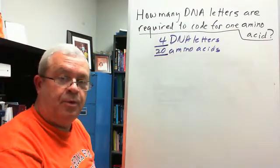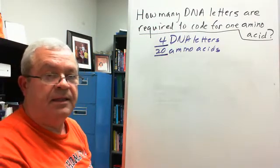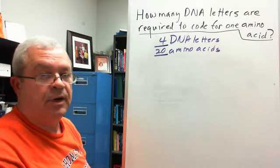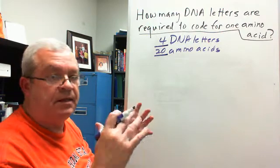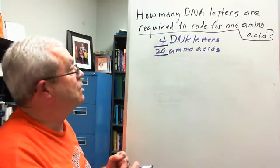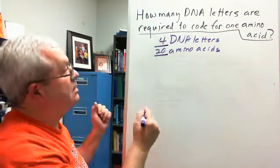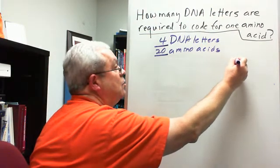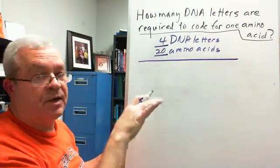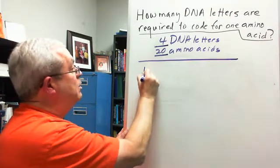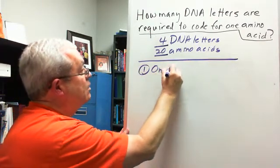Well, we're going to do a little thought problem, kind of like they did back in the 1950s after Watson and Crick discovered the initial and made the initial discovery about the structure of DNA. And so scientists were asking this question, and we can kind of follow in their footsteps by starting at the very lowest possibility, and that would be one DNA letter.